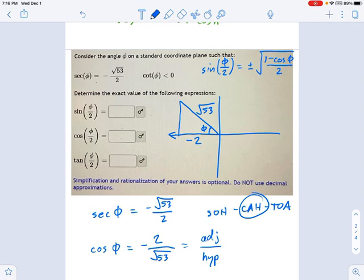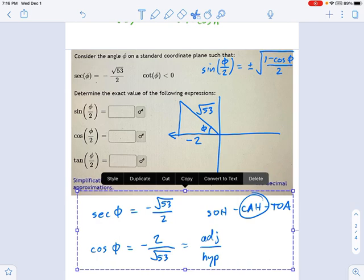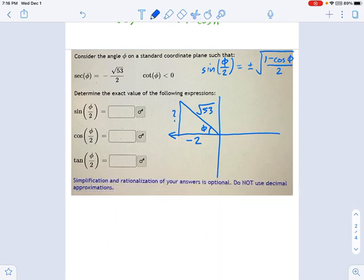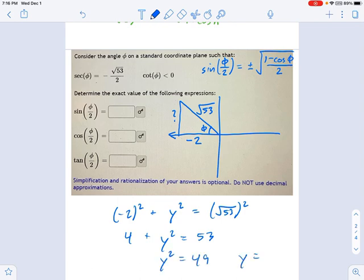So now, what is the y-coordinate, or what's the length of this other side of the triangle right here? And if we do a little Pythagorean theorem, I'm going to say negative 2 squared plus, I'll call it y squared, equals the square root of 53 squared. That means 4 plus y squared equals 53. That means y squared equals 49. That means y equals plus or minus 7. It's up to you to decide whether it's plus or minus 7. I'm going to put 7 on here and just remind you that we're going up. So I know that has to be a positive 7.